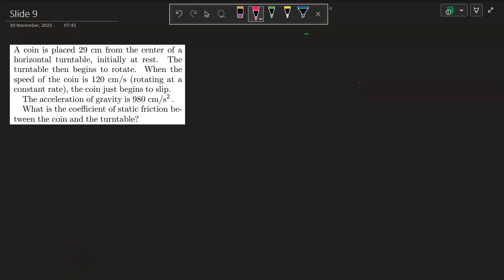Slide 9. A coin is placed 29 centimeters from the center of a horizontal turntable initially at rest. So I'm going to draw a circle. Imagine we're looking down on top of this spinning circle. Here's my coin.